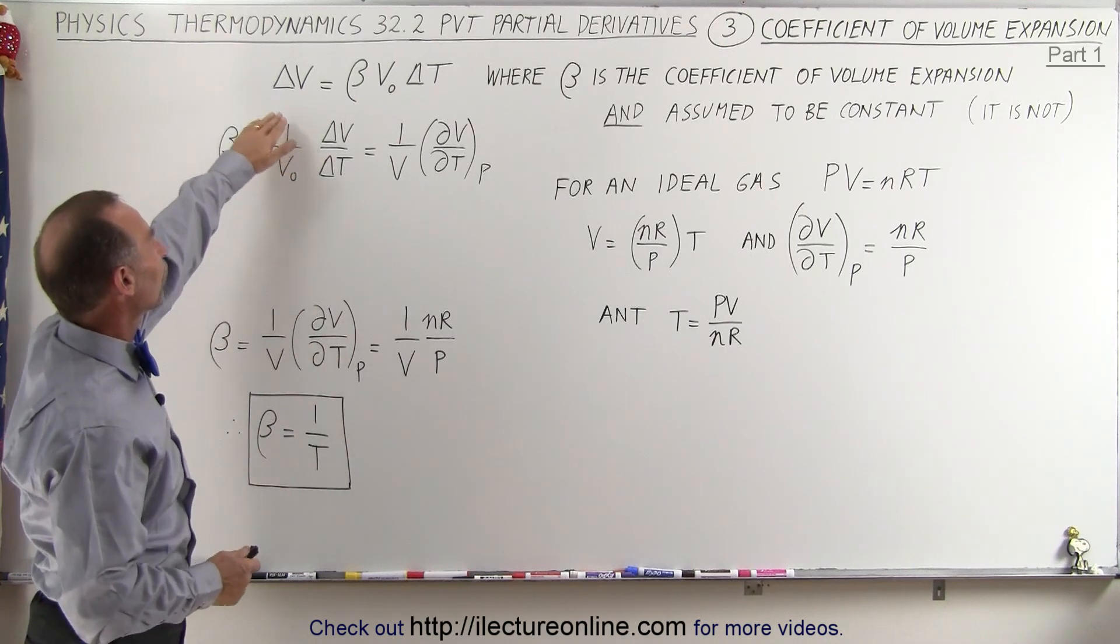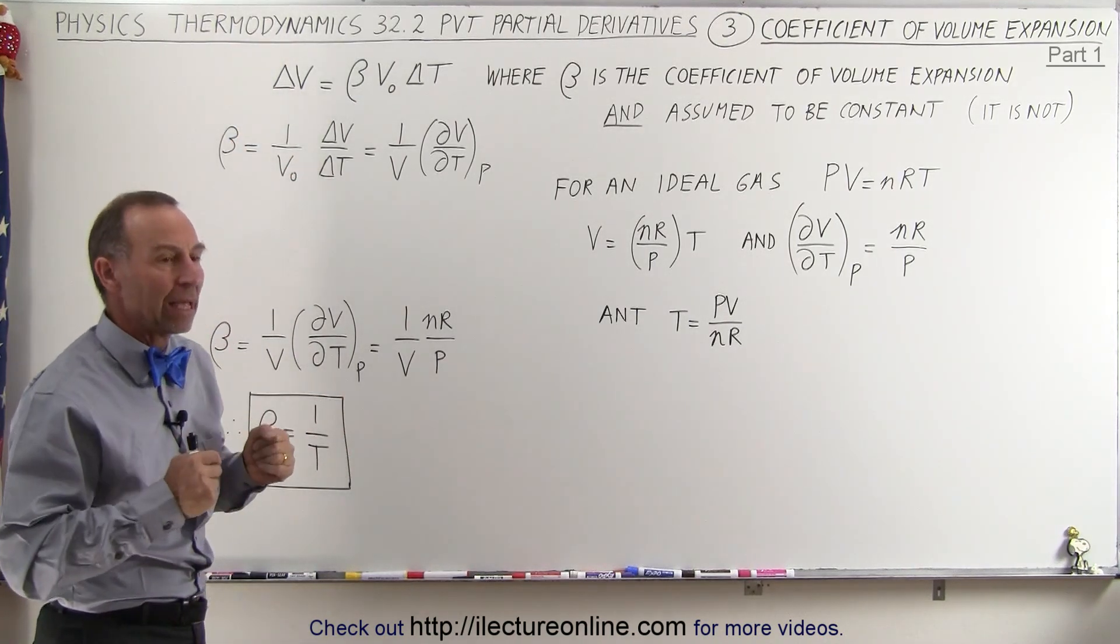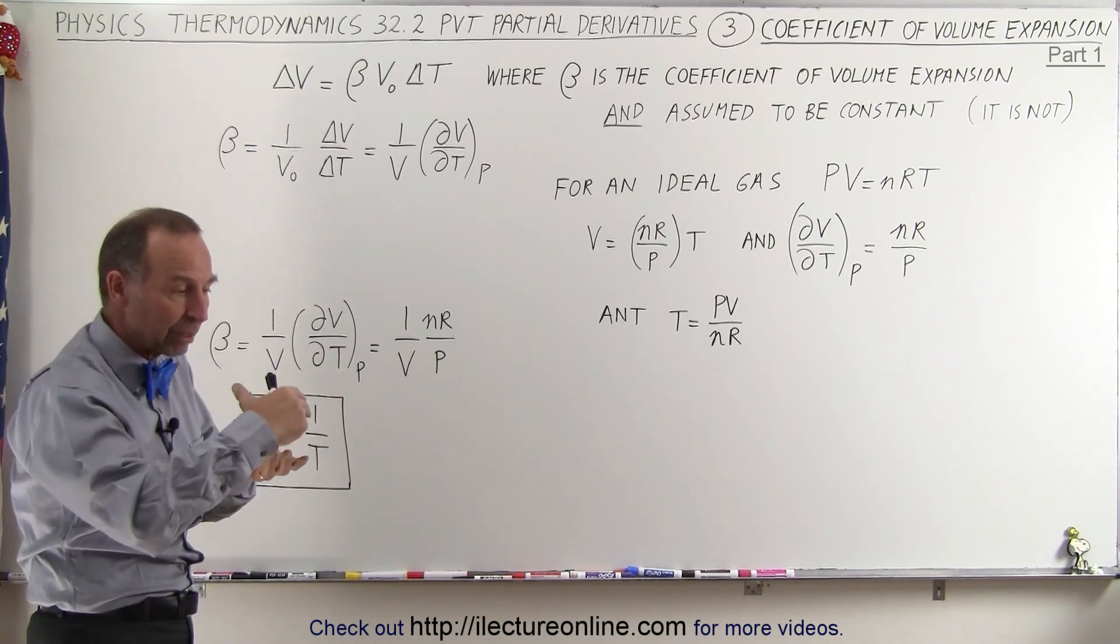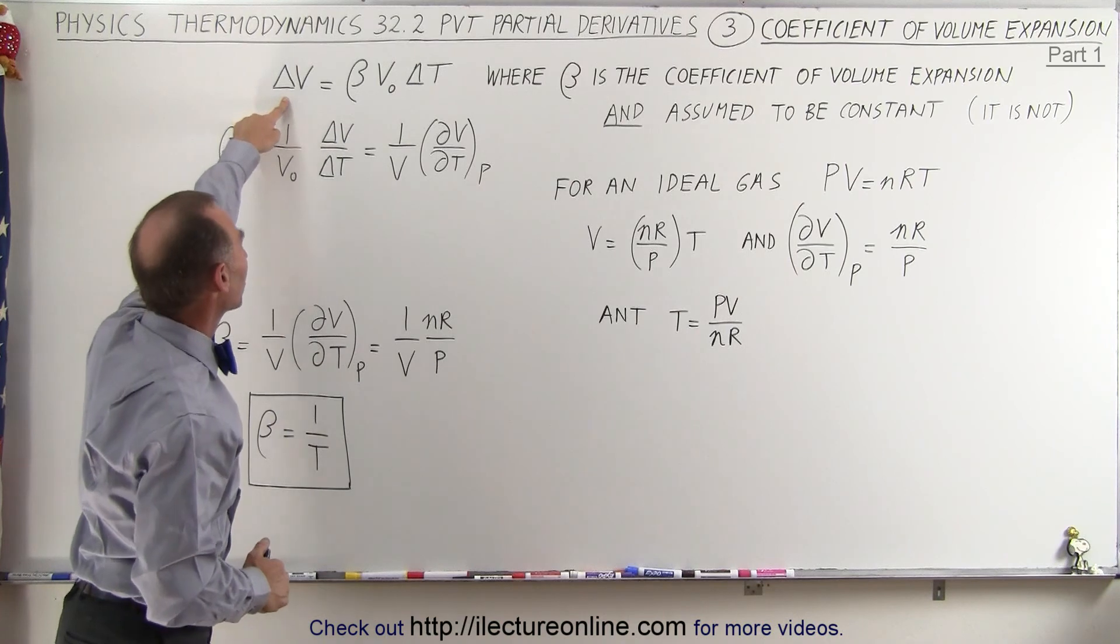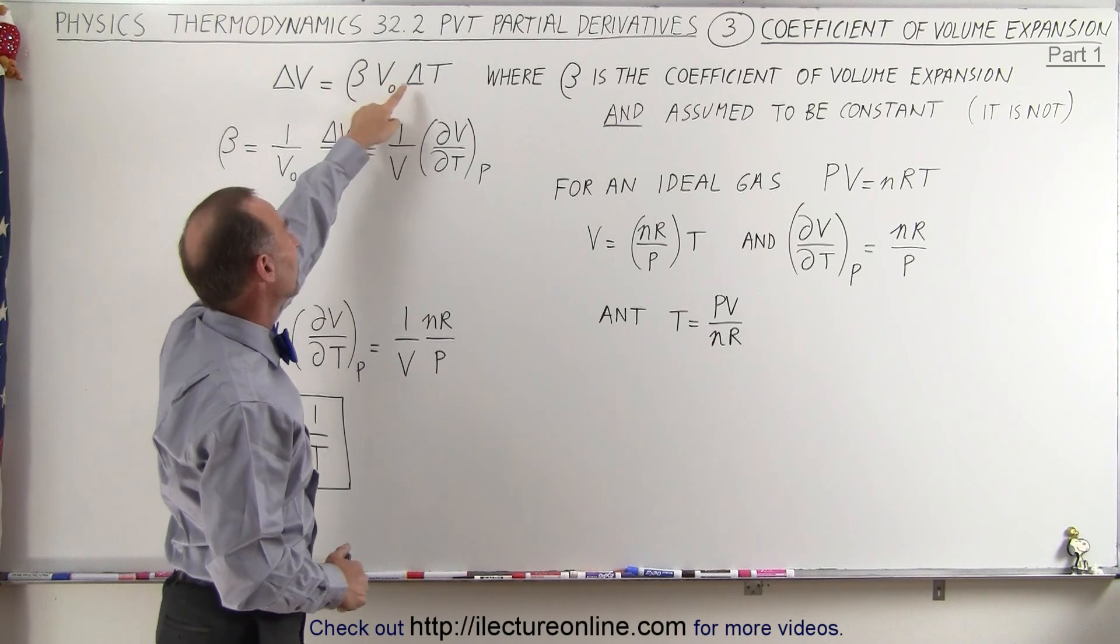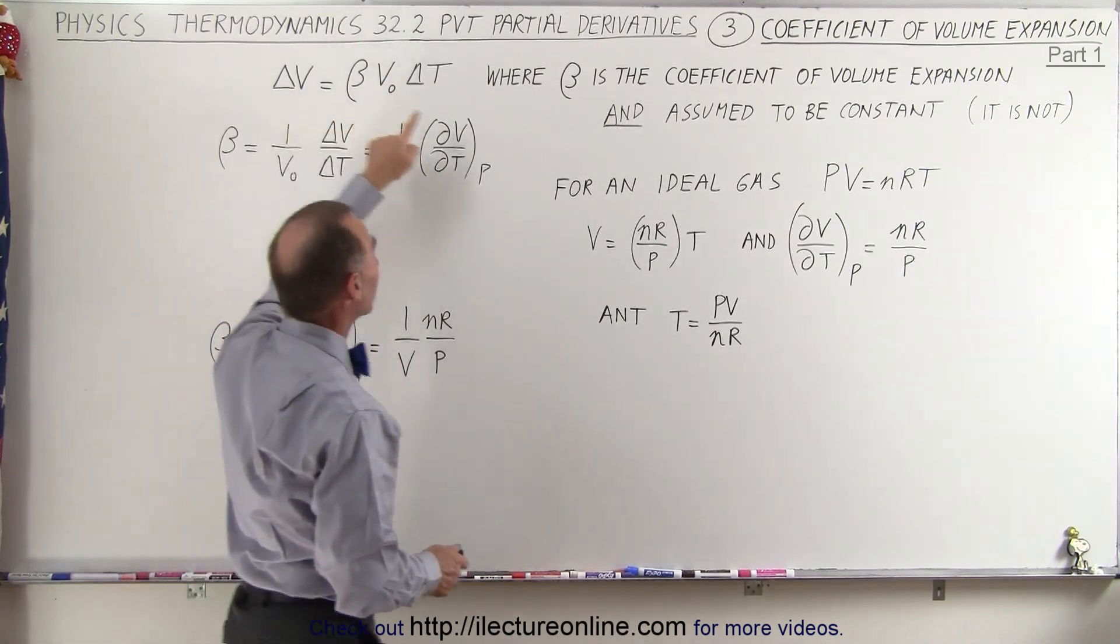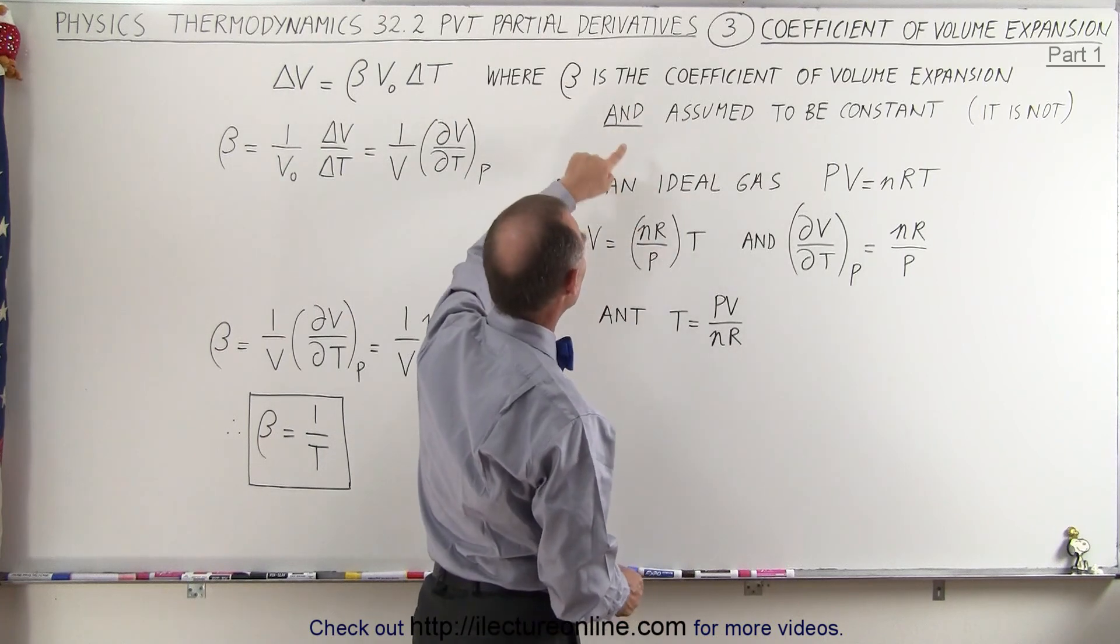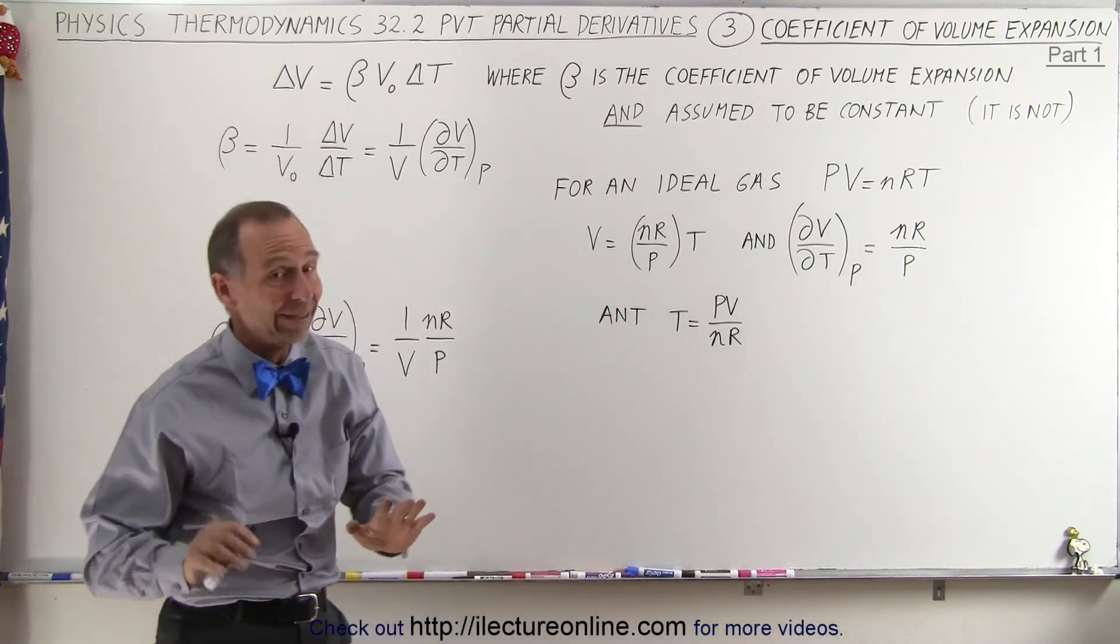Well, we learned in previous physics when we heat up an object we expect that object to expand. When it has volume we expect the volume to expand, and typically we express the change in volume as being equal to some coefficient of volume expansion times the original volume times the change in temperature. So beta is then considered the coefficient of volume expansion and we assume that to be constant, but it is not.